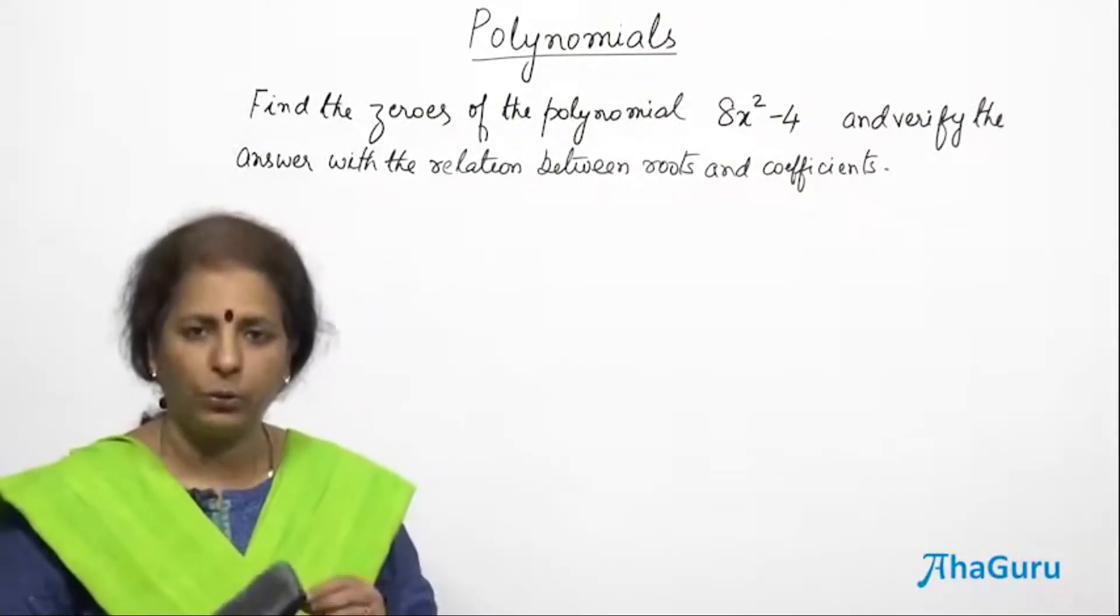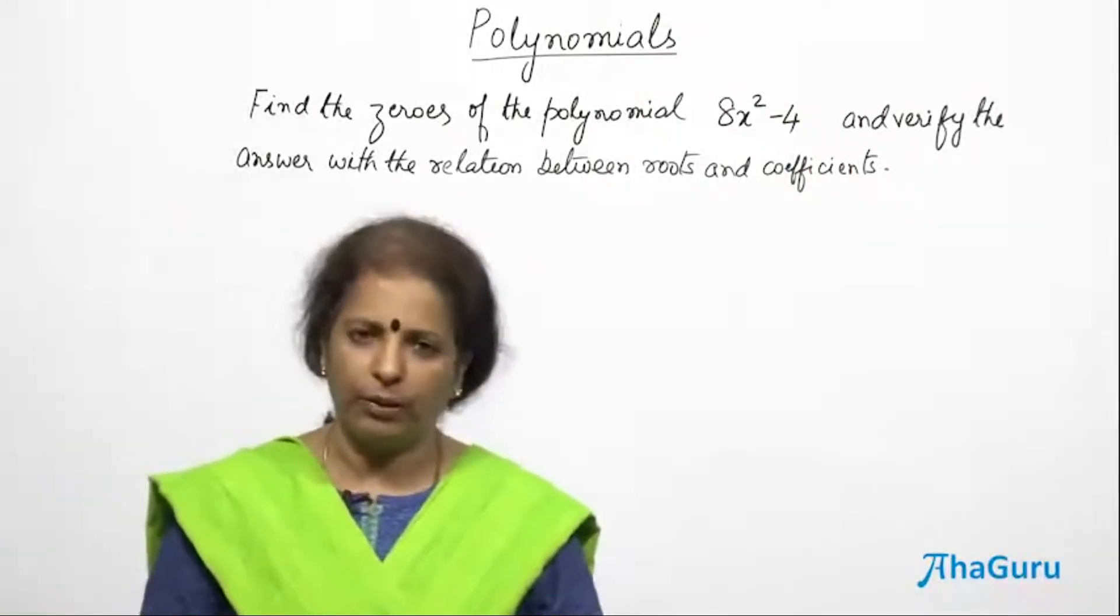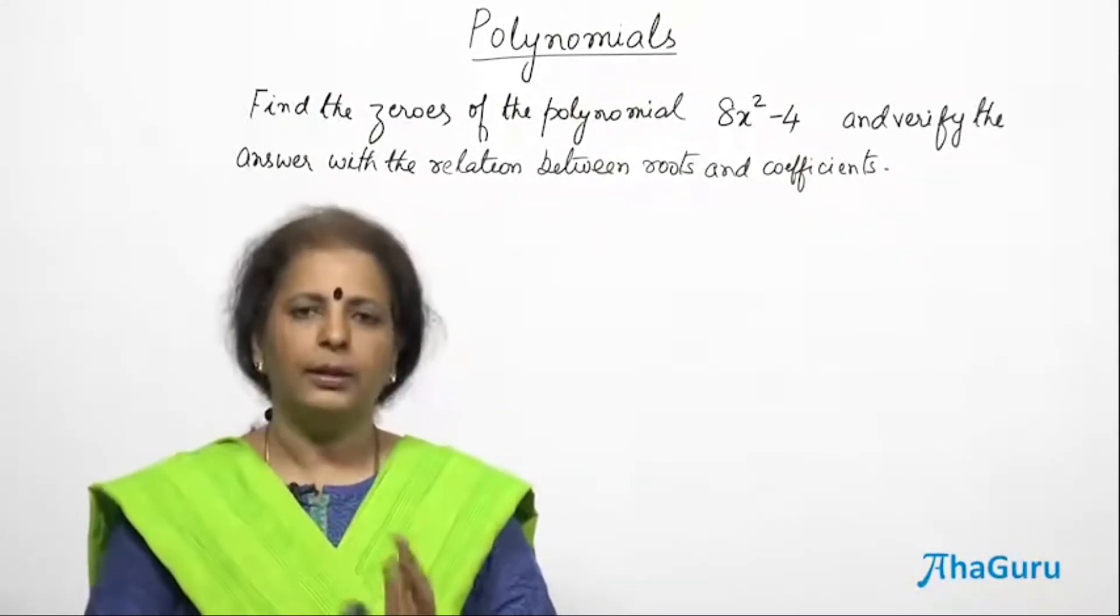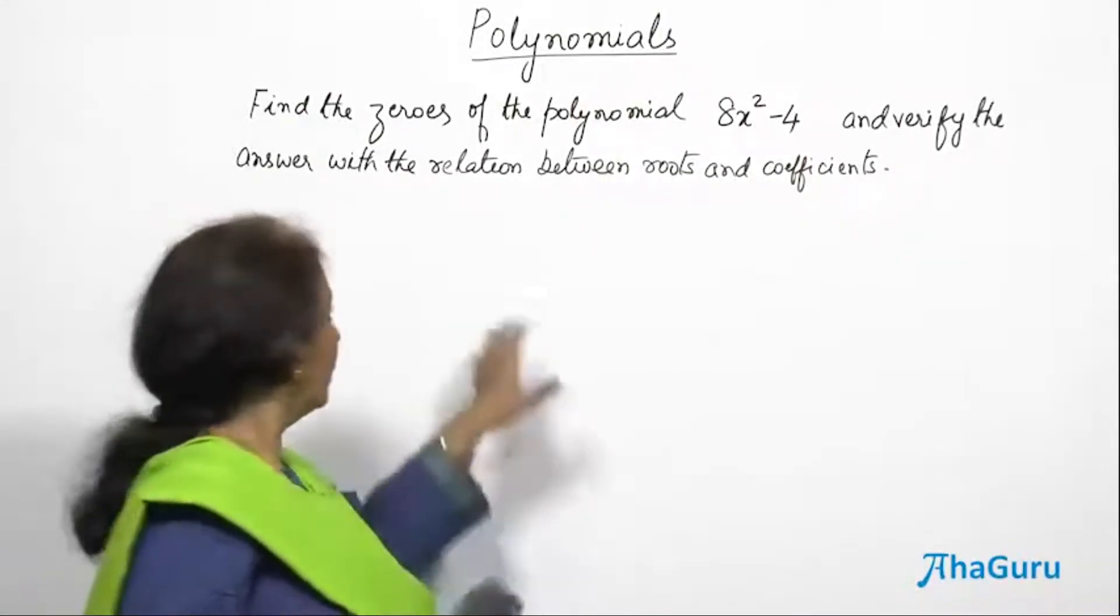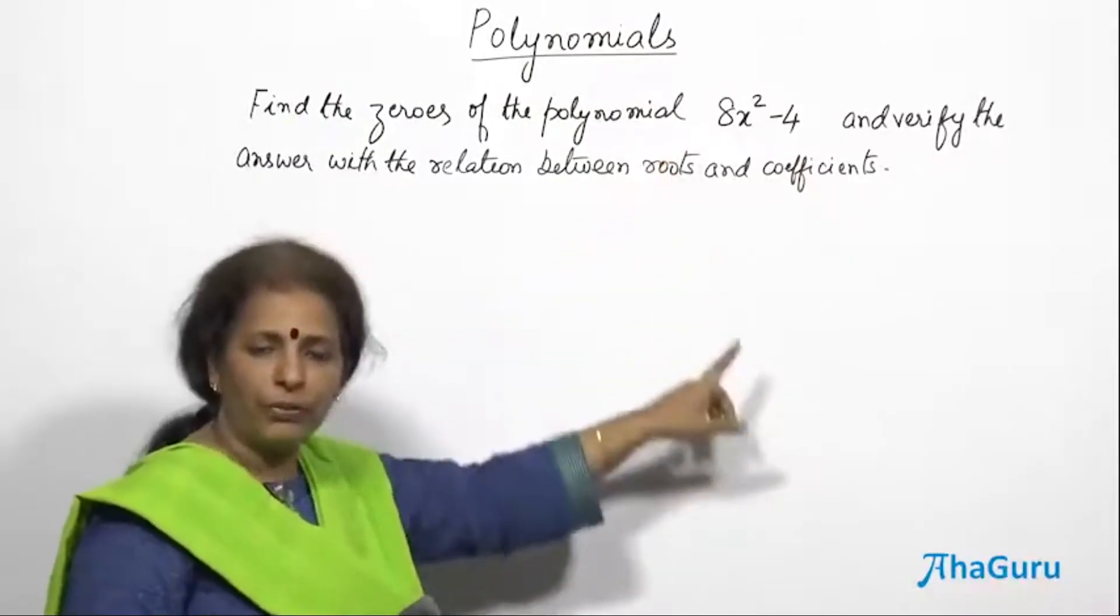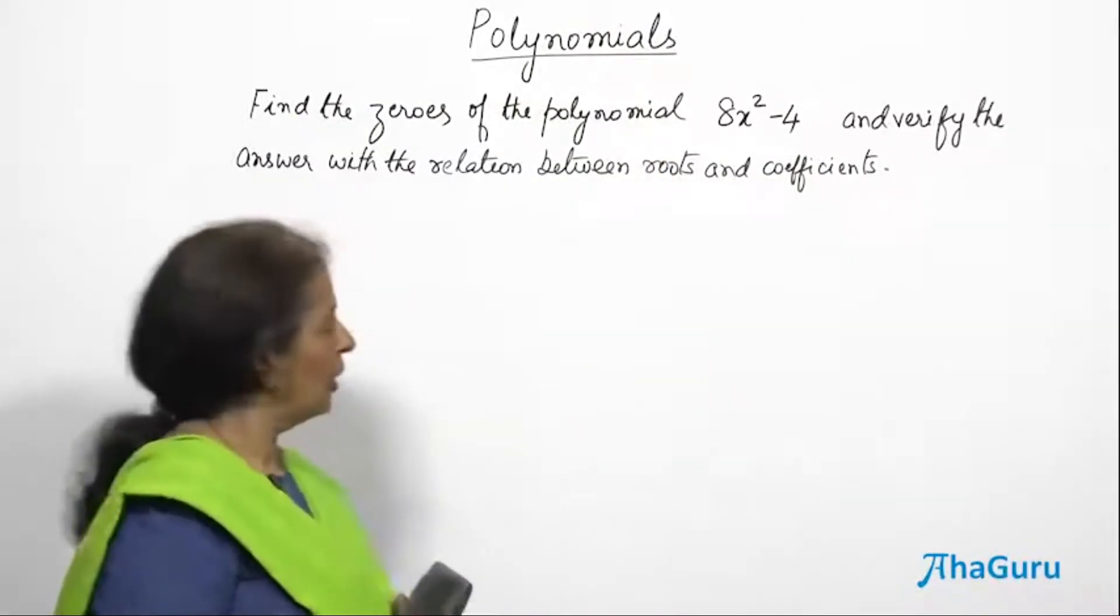We will find the roots, that is alpha and beta. We will add them, we will multiply them, and we will get an answer. Then we will use the relationship formula to verify whether our answer was correct or not.